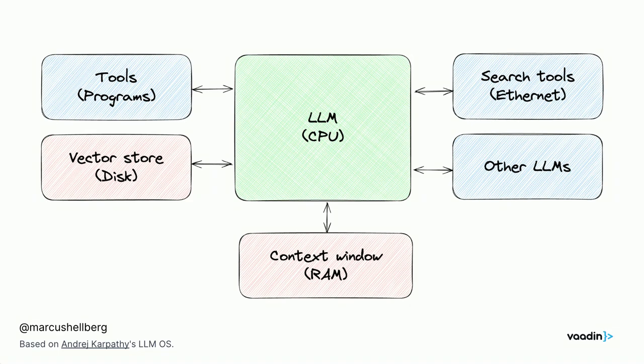I'm a Java developer, and I wanted to do this in Java. One useful way of looking at the equation of building an AI-powered app is this architecture diagram by Andrej Karpathy, one of the guys at OpenAI. He likened the architecture of an AI-powered application to a computer diagram, where you have the LLM as the CPU — the brains of the operation.